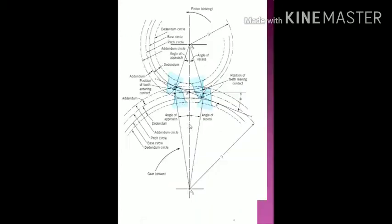I will show you that figure. When two gears are meshing each other, the point A to P — from the beginning of engagement to the pitch point — is called path of approach. And from point P to C, from the pitch point to end of engagement, that is called path of recess. So the point A to C is called path of contact; up to here only the teeth will be in contact, after this there is no contact.